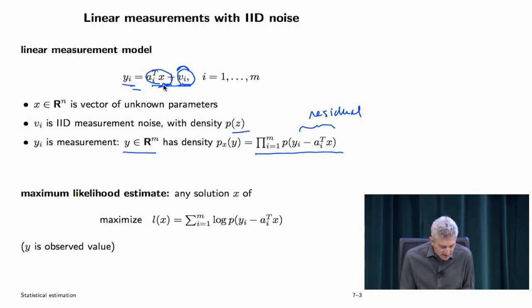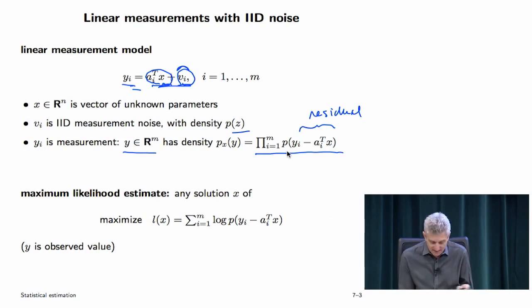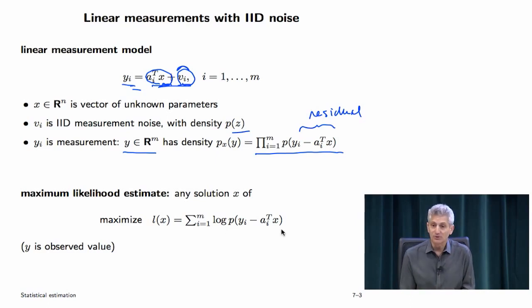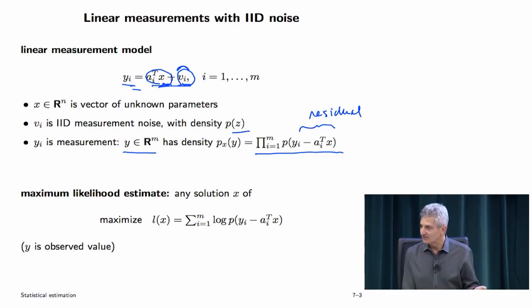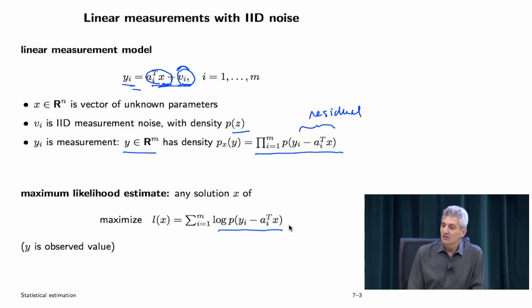The maximum likelihood solution: to estimate x by MLE, you maximize the log of this product, which is the sum. This is why the log comes up often. You maximize the sum of the log of the density of the residuals. If the residuals have a density centered around zero — a concave function that tails off — this is actually a penalty approximation problem. It's exactly minimizing a sum of a function we previously called penalties, where the penalty is the negative log likelihood.